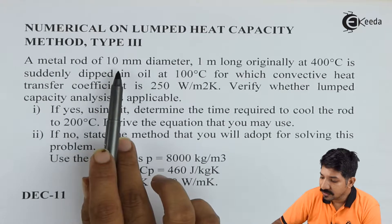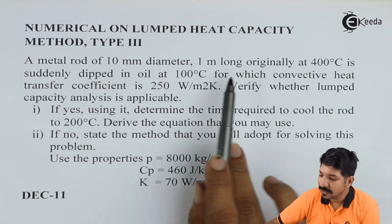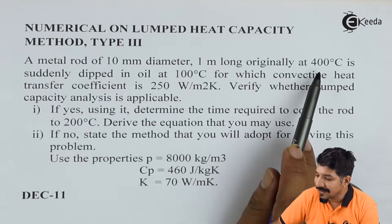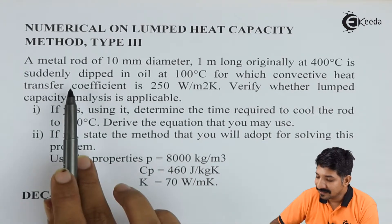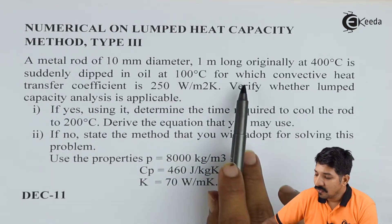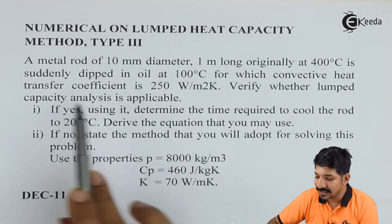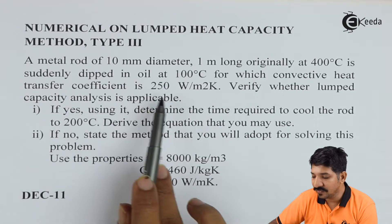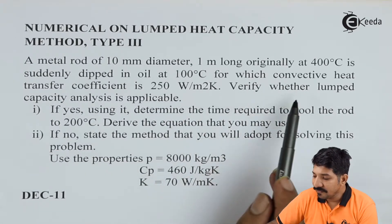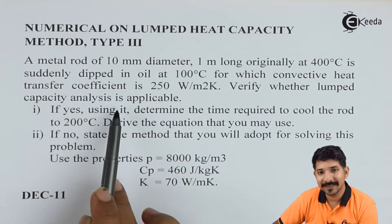A metal rod of 10 mm diameter, 1 meter long originally at 400 degree Celsius is suddenly dipped in oil at 100 degree Celsius, for which the convective heat transfer coefficient is 250 Watt per meter squared Kelvin. Verify whether the lumped heat capacity analysis is applicable.